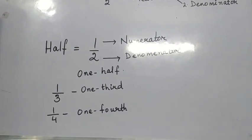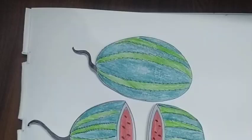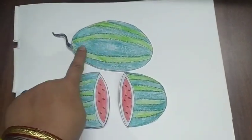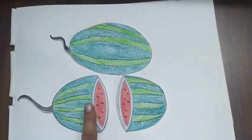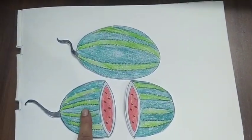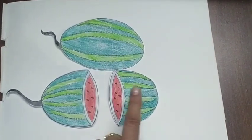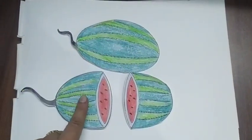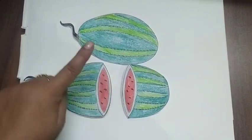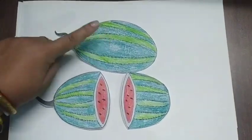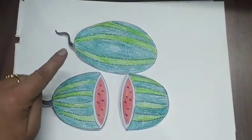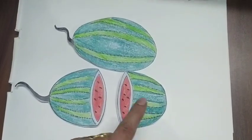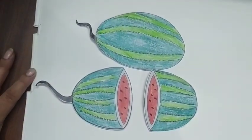Right? So this is the whole watermelon and this one is the half of this whole. Means the whole watermelon is divided into two parts — this is the one part and this is the second part. If we had divided this whole into three parts, it would have been one by three. As it is divided into two parts, it is called one by two. So children, this is what fraction is.